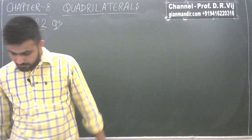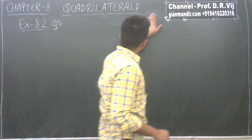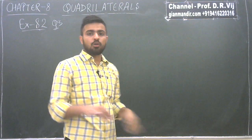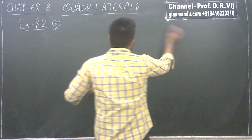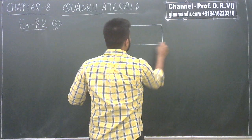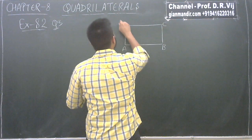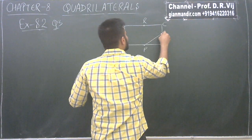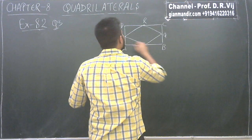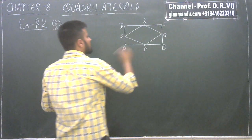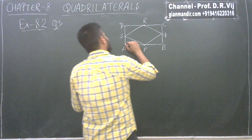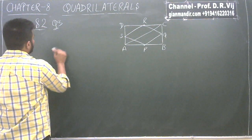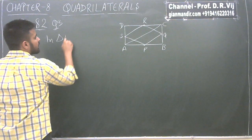Question number 3 says: ABCD is a rectangle. We have been given the rectangle and we have to prove that PQRS is a rhombus. What is the property of a rhombus? If all the sides are equal, then it is a rhombus — if in a parallelogram all sides are equal, it becomes a rhombus. So let's first draw the figure: rectangle ABCD with midpoints P, Q, R, S. We will join diagonal AC.